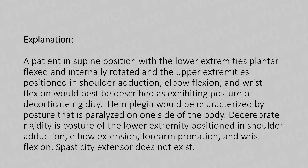Hemiplegia would be characterized by paralysis on one side of the body. Decerebrate rigidity is a posture of upper extremities positioned in shoulder adduction, elbow extension, forearm pronation, and wrist flexion. Spasticity extensor does not exist as a recognized classification.